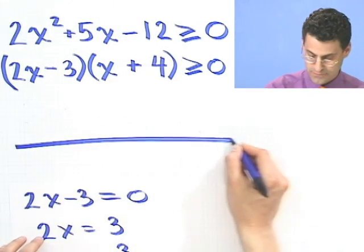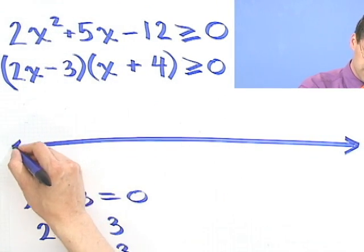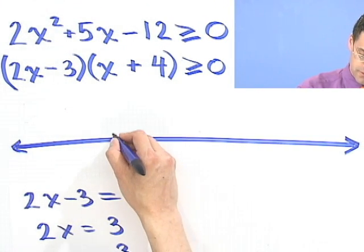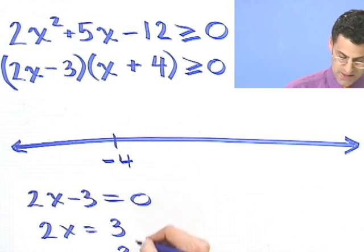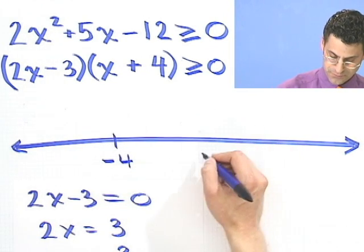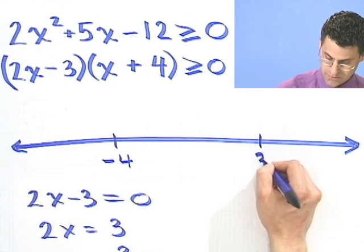I have negative 4. That's where this is 0. And then I've got 3 over 2, way over here.